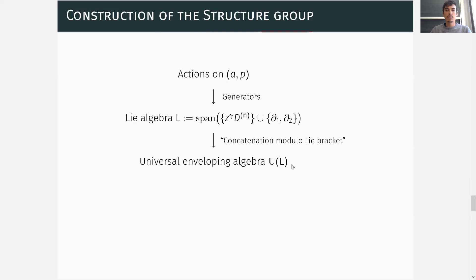This universal enveloping algebra is also naturally a Hopf algebra, which means that it comes with the product, which is given by the concatenation of elements, and with the co-product, which basically means that we are able to split a word into two.